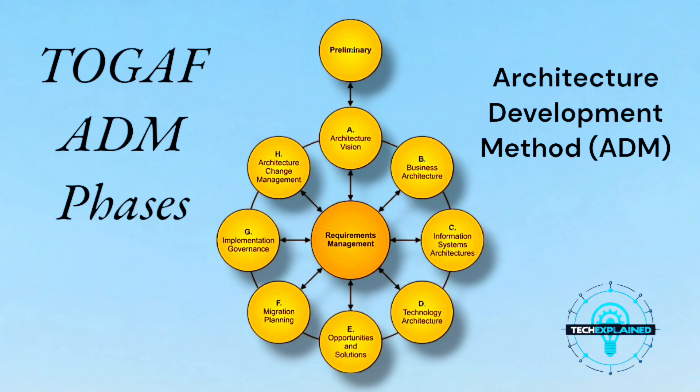Finally, we get to Architecture Change Management, Phase H. This is where you ensure the house — or in this case, the enterprise — can evolve. Maybe you decide you need a second pool later, or the robot butler needs an upgrade. Businesses are dynamic, and this phase is about adapting the architecture to future needs, handling upgrades, and keeping things relevant.